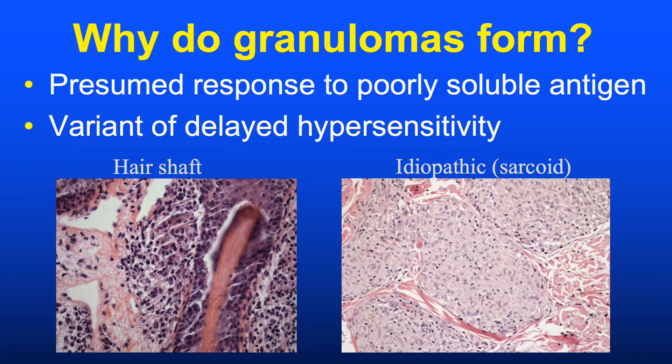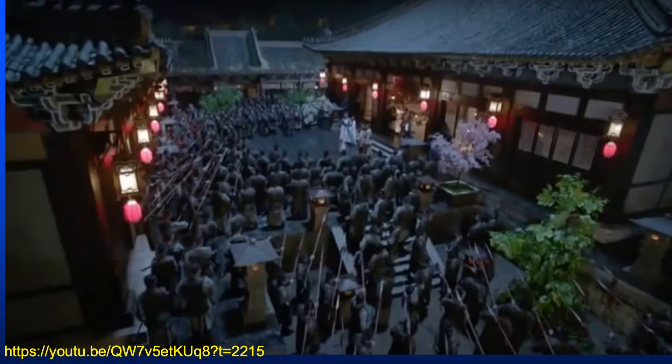Granulomas are regarded as a response to a poorly soluble or poorly degraded antigen — in many cases a pathogen. Not only schistosoma, but particularly mycobacteria and fungi induce a granulomatous reaction. Exogenous substances, as well as one's own hair shaft upon follicular rupture, commonly induce a granulomatous reaction. There is also a group of idiopathic granulomatous disorders, the prototype being sarcoid.